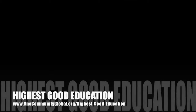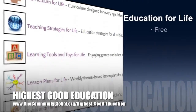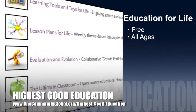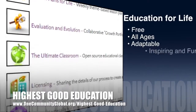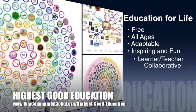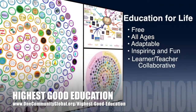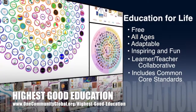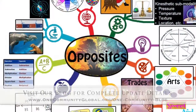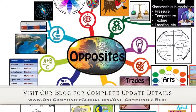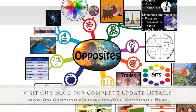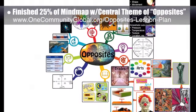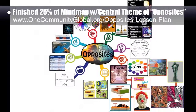One Community's approach to Highest Good Education is open source and free shared, designed for all age groups, adaptable to any schooling environment, inspiring and fun for all participants, a learner-teacher collaborative, and includes U.S. Common Core standards. This week, the core team — which consists of the Satellite and Pioneer members — finished the first 25% of the lesson plan mind map with the central theme of opposites. You can see that expanding in the background here.